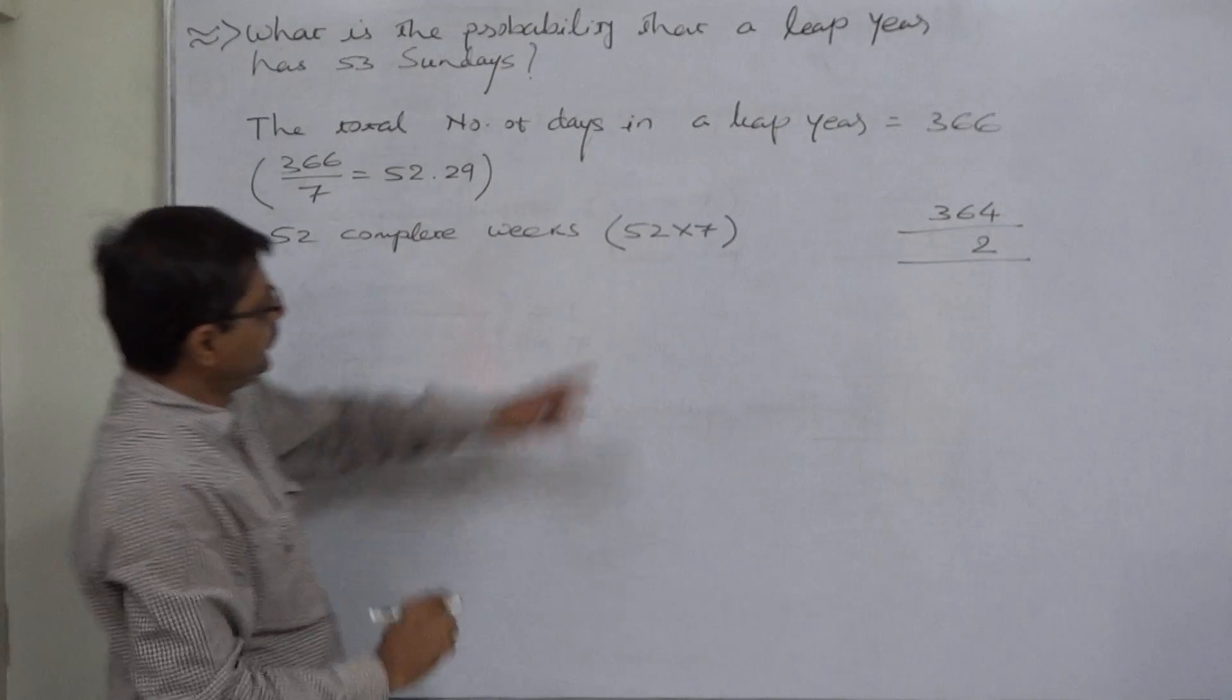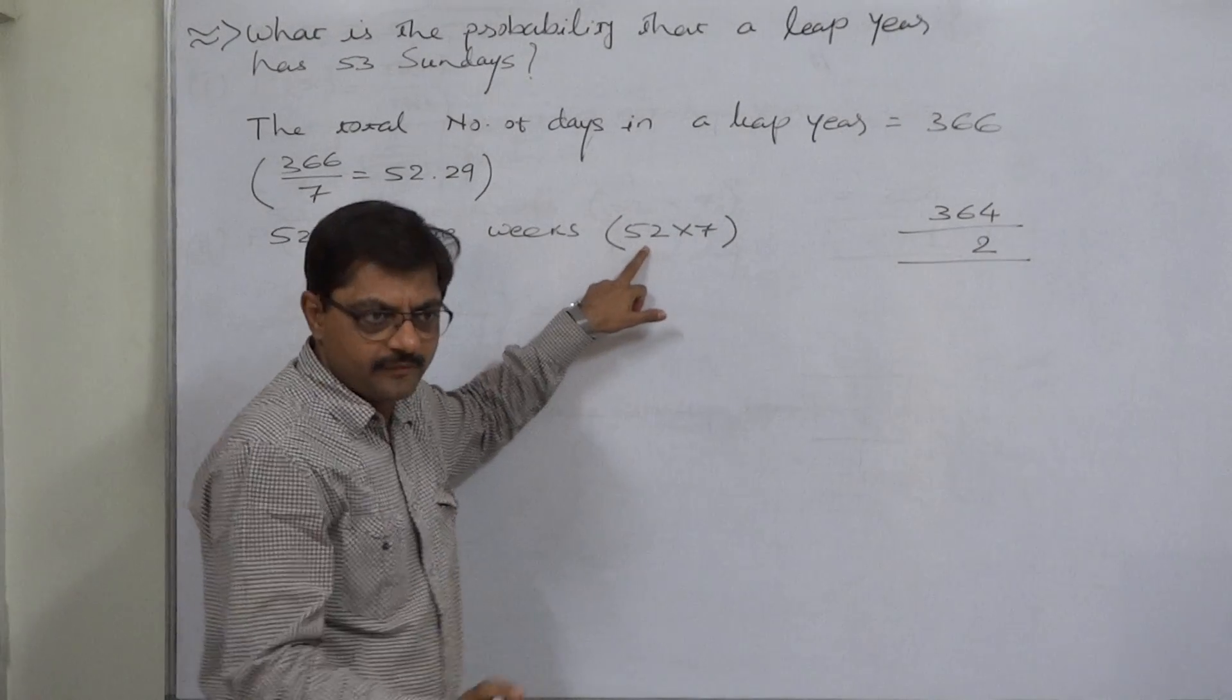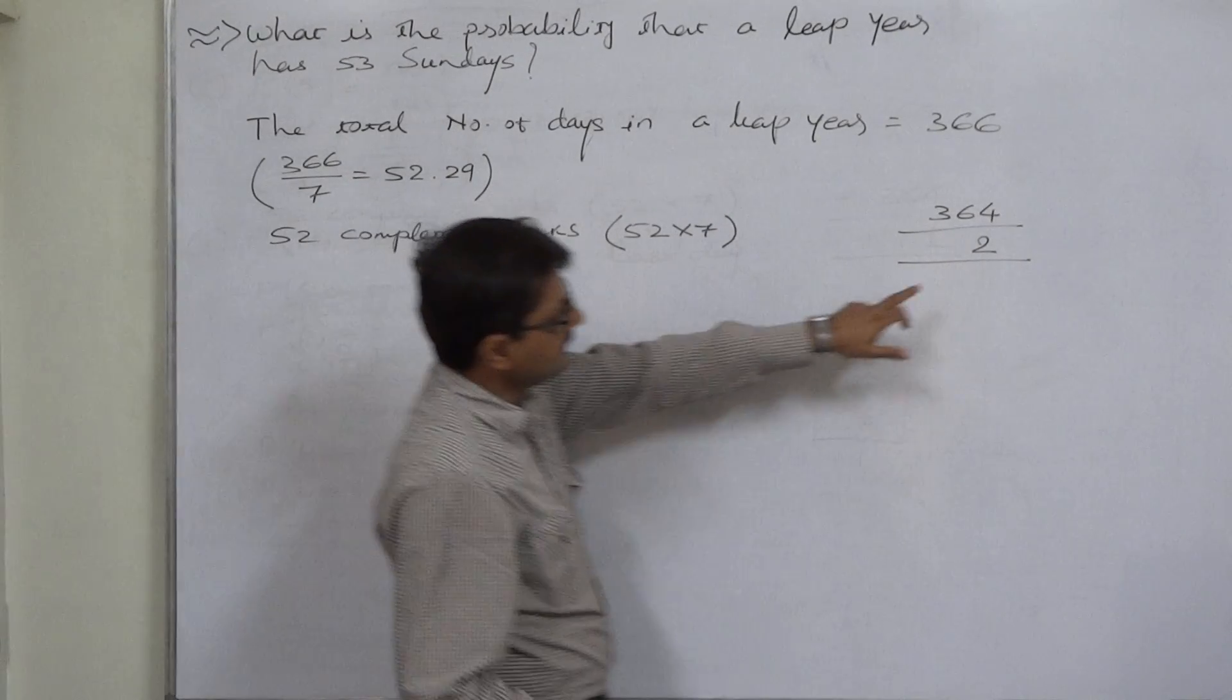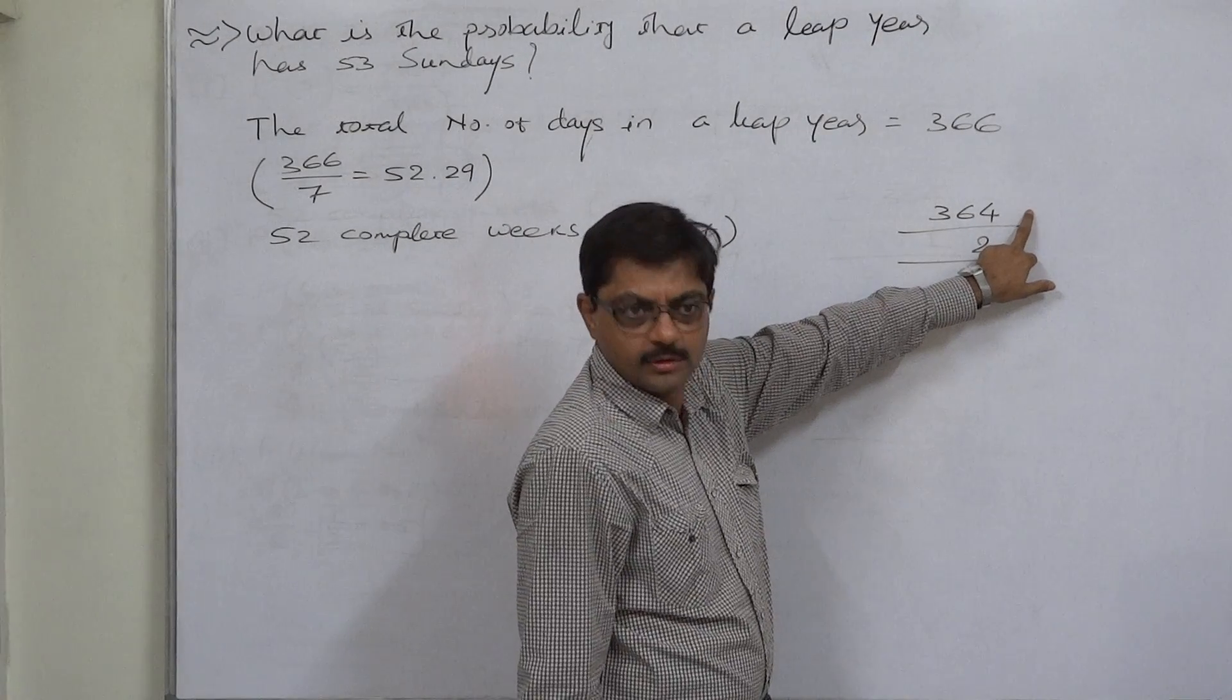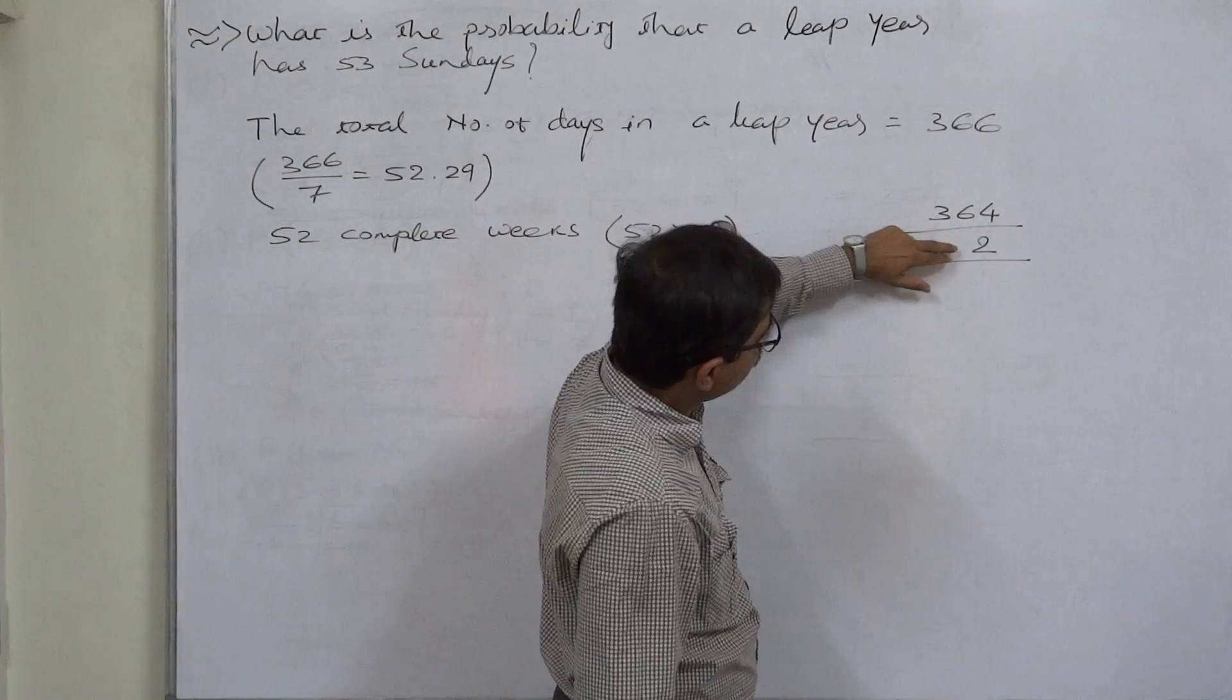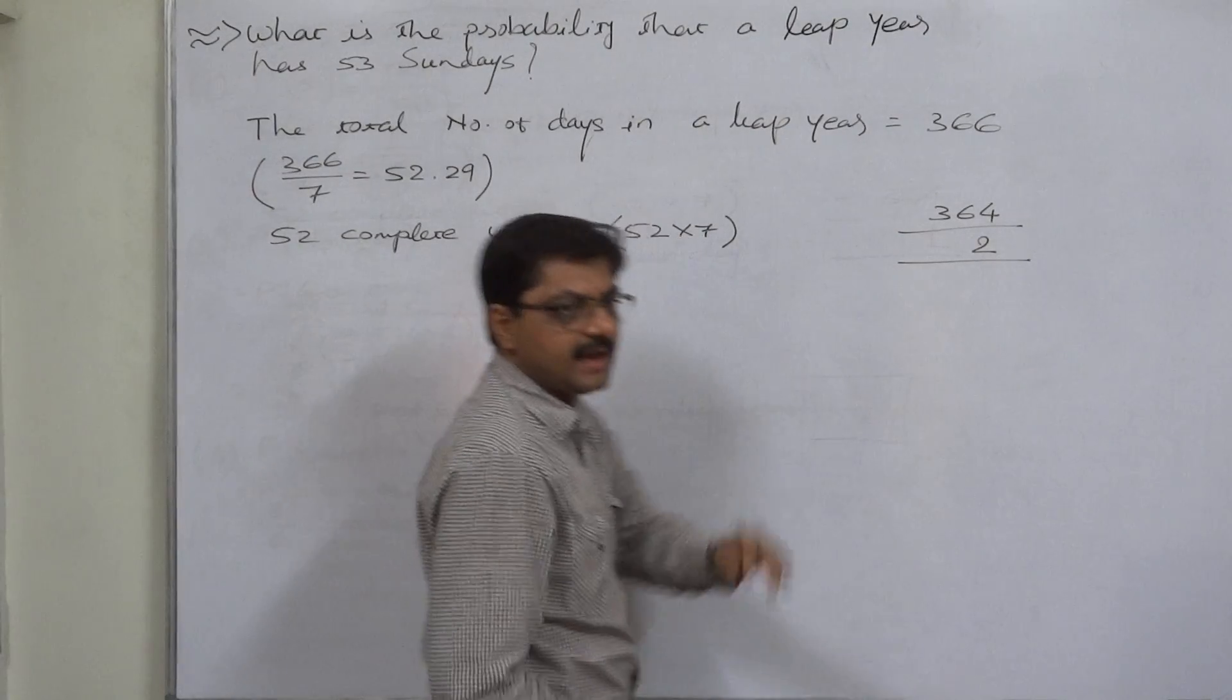During these 52 weeks we know that each and every day has come for 52 times. That means till 29th December, each and every day has come for 52 times.